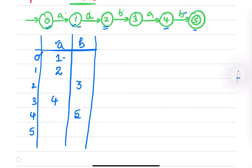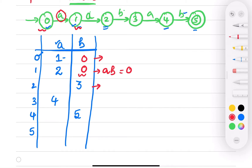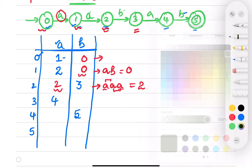Now let's find the prefix table values for the transition function. At state zero you have nothing, so it will be zero. At state one you have 'a', and you need to fill the position for b — you add b to it and find the prefix value, which is zero, since 'a' doesn't match 'b'. At state two you have 'aa', and you need to fill for input a — since 'a' matches with 'aa', the value is two.